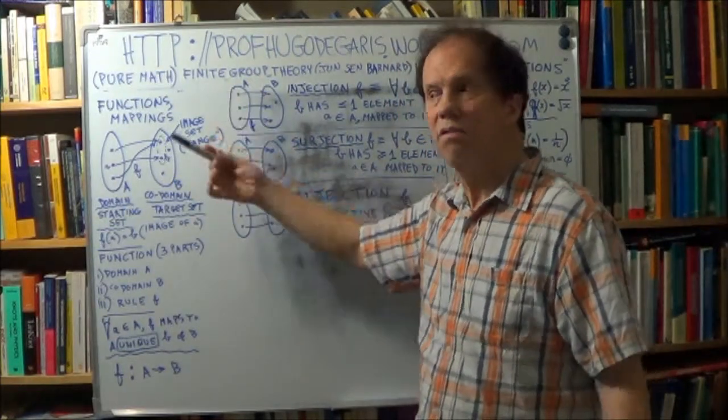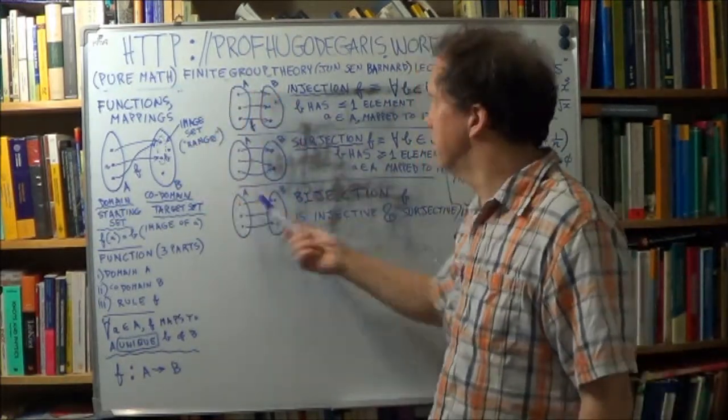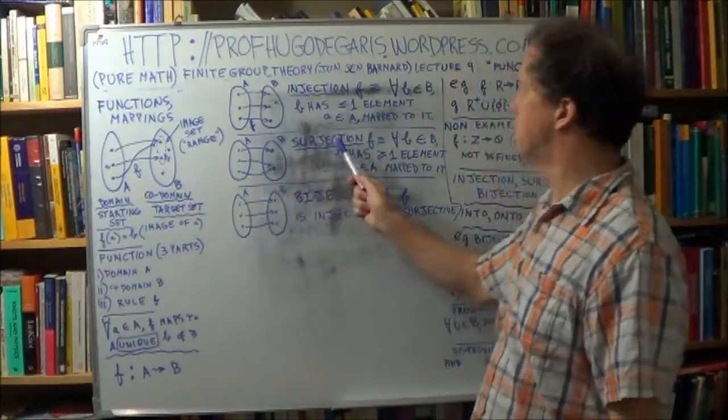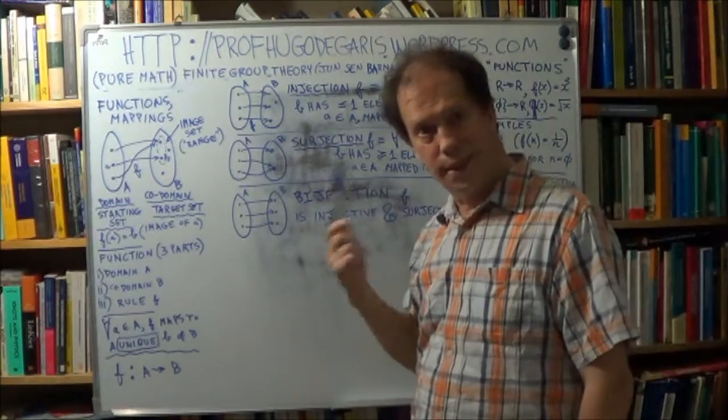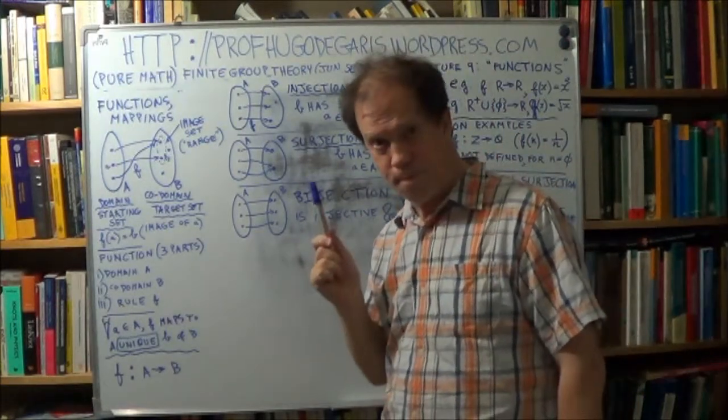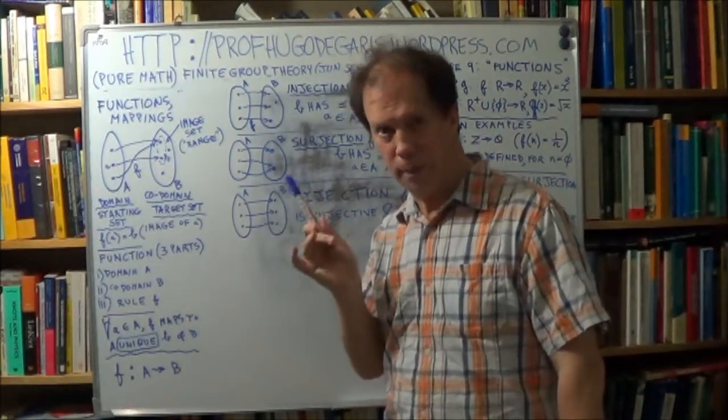It's like a straggler, disconnected. So this function here is not surjective. Or, another way of saying the same thing, it is not onto. It's not an onto mapping.